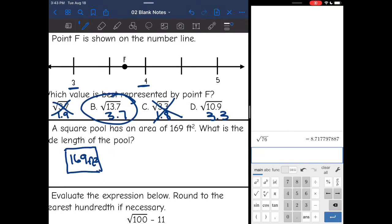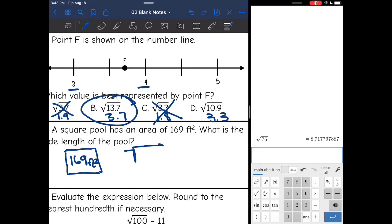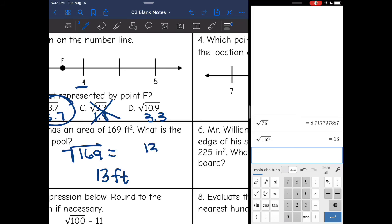So to find the side length of a square, I just need to take the square root of it. And the square root of 169, that's one of our perfect squares, it's 13. So the side length is 13 feet. You can verify because 13 times 13 would equal 169.